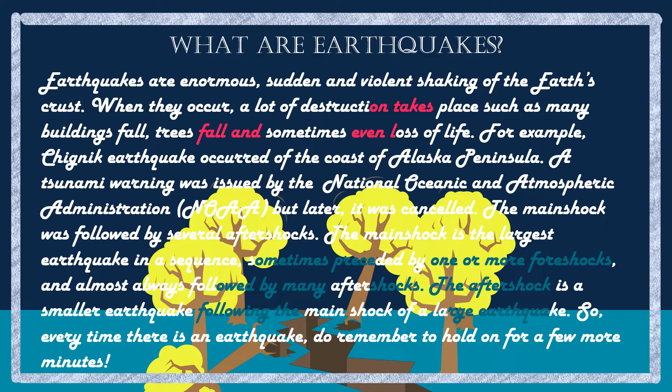When a tsunami comes, the land gets flooded, water gets contaminated, houses are ripped apart, and crops are destroyed. For example, the Chignik earthquake occurred on the coast of the Alaska Peninsula — a tsunami warning was issued by the National Oceanic and Atmospheric Administration (NOAA) but later cancelled. The main shock was followed by several aftershocks. The main shock is the largest earthquake in a sequence, sometimes preceded by foreshocks and almost always followed by aftershocks. An aftershock is a smaller earthquake following the main shock of a large earthquake.